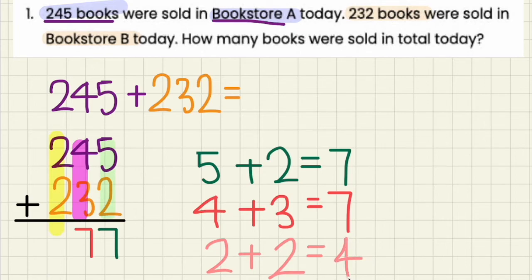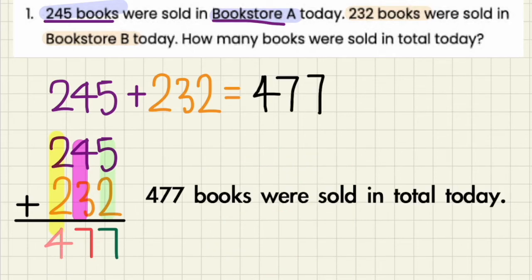That's right, it's 4. So our final answer to this question, 245 plus 232 is 477. And to answer that in full sentence, we would write, 477 books were sold in total today.